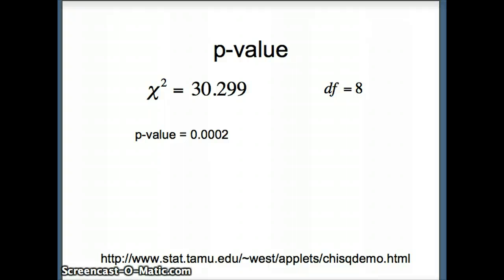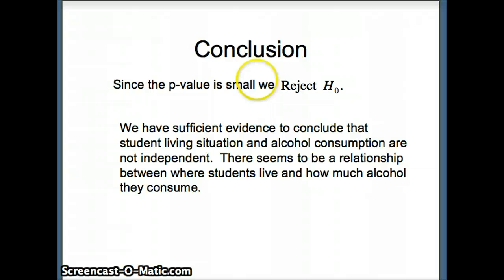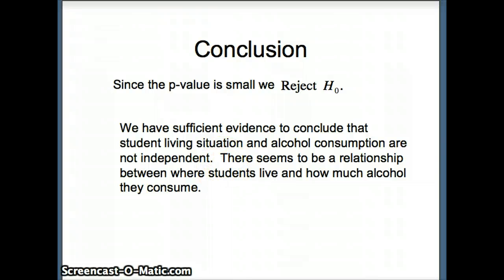A p-value of 0.0002 means that if we assumed student living situation and alcohol consumption were independent, the chance of getting data like this by random chance is two parts in 10,000. Since that's so low, we question our assumption — maybe living situation and alcohol consumption are not independent, maybe they are related. In our conclusion: since the p-value is small, we reject H-naught. We have sufficient evidence to conclude that student living situation and alcohol consumption are not independent; there seems to be a relationship between where students live and how much alcohol they consume.